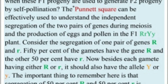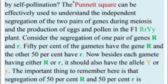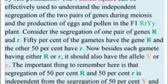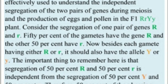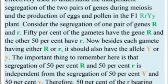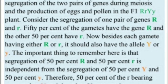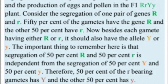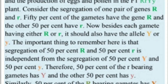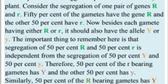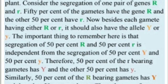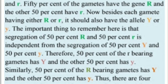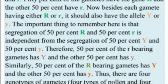Consider the segregation of one pair of genes R and r. 50% of the gametes have the gene R (capital R) and the other 50% have r (small r). Besides each gamete having either capital R or small r, it should also have the allele Y or small y. The important thing to remember is that segregation of 50% R and 50% r is independent from the segregation of 50% Y and 50% y.